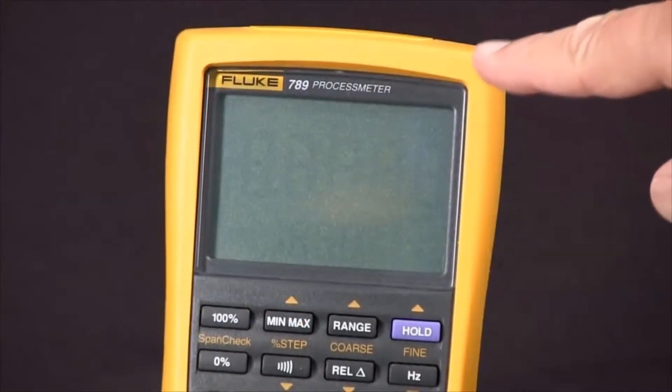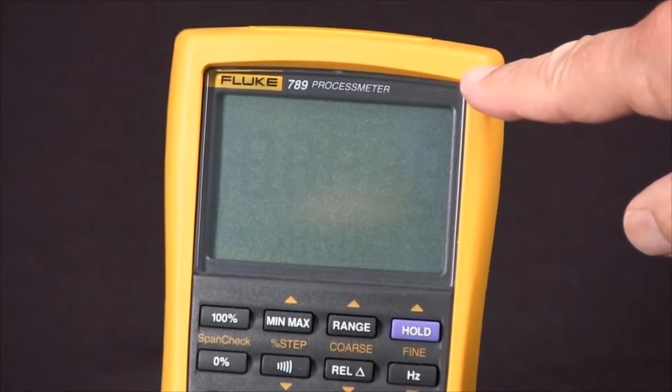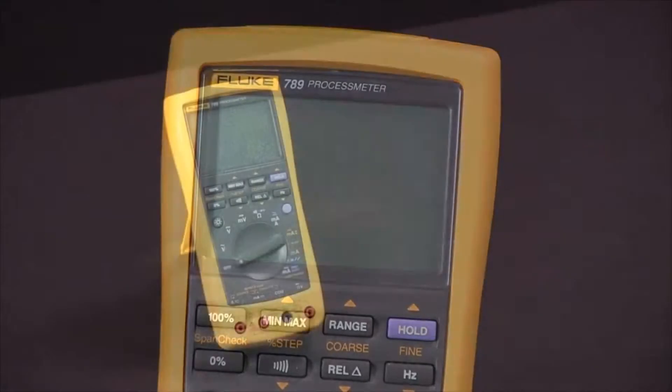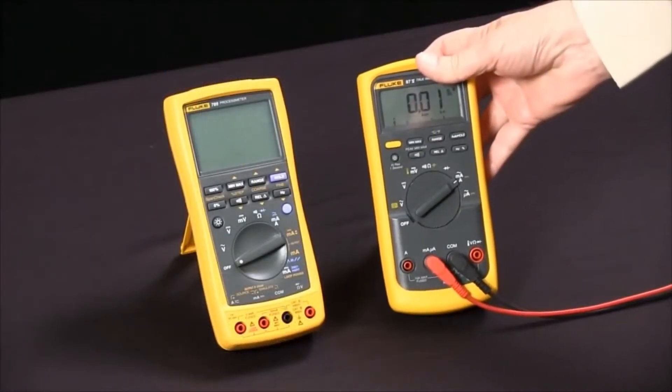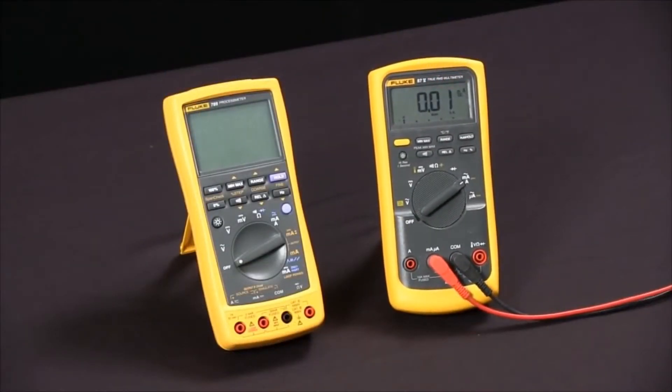To source 4 to 20 milliamps DC current with our Fluke 789 process meter, we're going to use a digital multimeter to measure the current that we're sourcing.